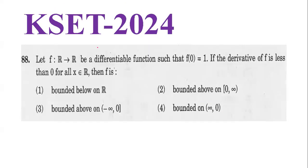First question, KSET 2024: Let f from R to R be a differentiable function such that f(0) = 1. If the derivative of f is less than 0 for all x in R, then f is: (a) bounded below on R, (b) bounded above on closed [0, ∞), (c) bounded above on (-∞, 0], (d) bounded on (0, ∞).